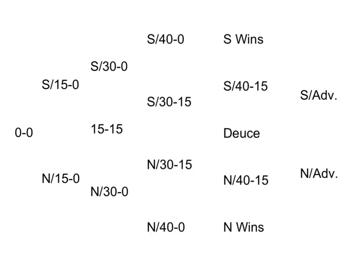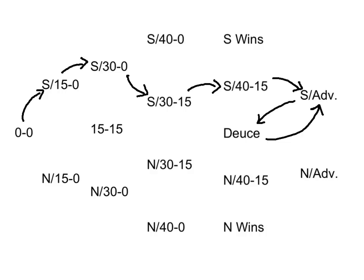Here are all the different scores that can occur in this tennis game between the server and the non-server. Let's trace one possible scenario: the server wins the first point to go up 15-0, wins another to go 30-0, the non-server wins to make it 30-15, the server wins again for 40-15, then loses a point making it server's advantage, the non-server wins to bring it to deuce, server wins for server's advantage again, then wins once more — the server is two points ahead and wins the game. That's an absorbing state: the server has won.